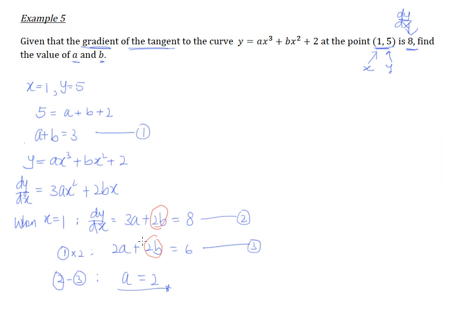So, when a equals to 2, of course, I'll substitute back into any of this equation. And I'll get my b, which is the easiest one, which is this one. So, we know that 2 plus b equals 3, and therefore, b equals to 1. So, there you go, a equals to 2, and b equals to 1.